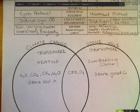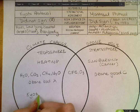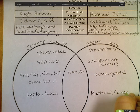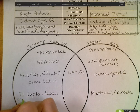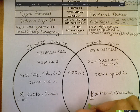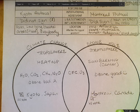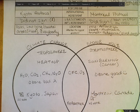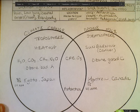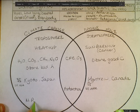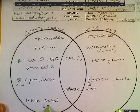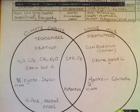Looking at treaties: there's Kyoto — signed in Japan — and the Montreal Protocol — signed in Canada. How did the US vote? A big no to Kyoto. Over here for Montreal, they said sure thing. Who is going to be hard hit? Antarctica is taking a hard hit with both. For climate change you also have the North Pole getting a hard hit, and coastal areas. Not so much for the ozone hole. That's about as basic as you can get comparing climate change versus the hole in the ozone layer.